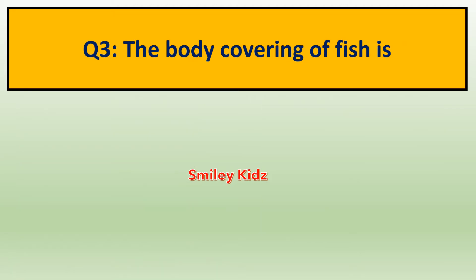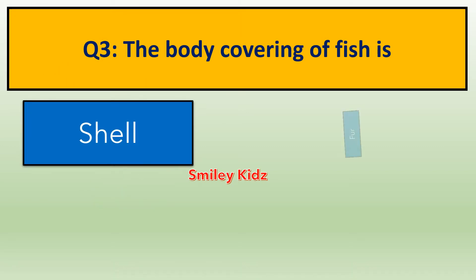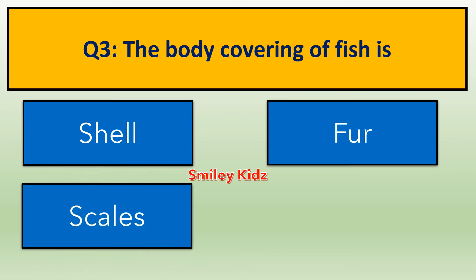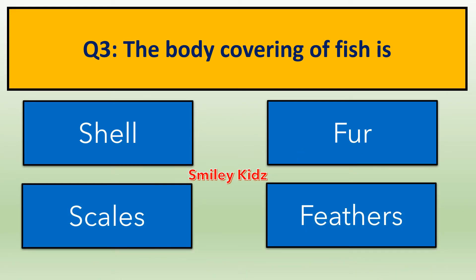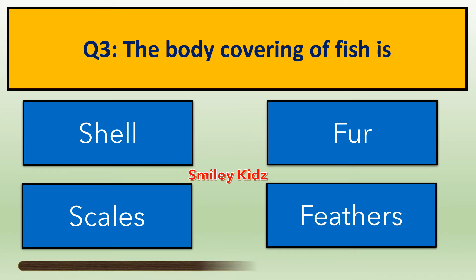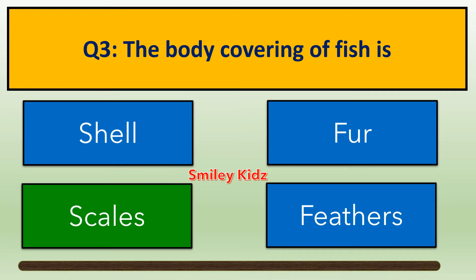Question number 3. The body covering of fish is — options are: A. Shell, B. Fur, C. Scales, D. Feathers. Your time starts now. The right answer is Scales. The body covering of fish is Scales.